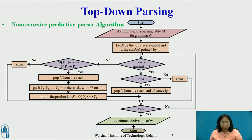First step: set IP to point to the first symbol of W. Repeat: let X be the top stack symbol and a the symbol pointed to by IP. If X is a terminal or $, then if X equals a, pop X from the stack and advance IP; else, error. Else, X is a non-terminal. If M[X, a] equals X → Y1 Y2 ... Yk, then pop X from the stack, push Yk, Yk-1, ..., Y1 onto the stack with Y1 on top, and output the production X → Y1 Y2 ... Yk; else, error.